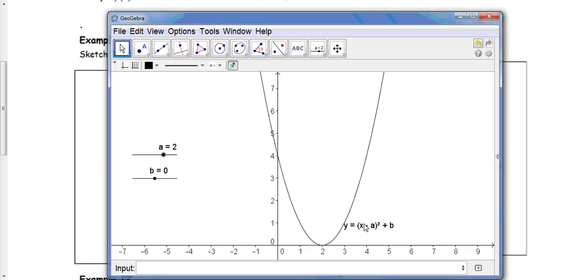So now we have here brackets x minus 2 close brackets squared, because a is currently 2.